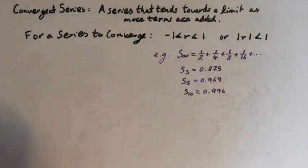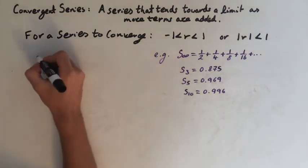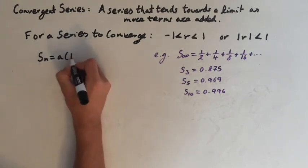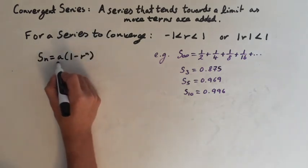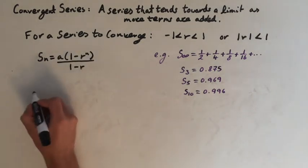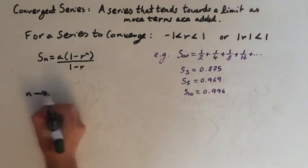So let's try and prove that. The formula for the sum of a geometric series is S of n equals a times 1 minus r to the n all over 1 minus r. So what's going to happen as n tends towards infinity?